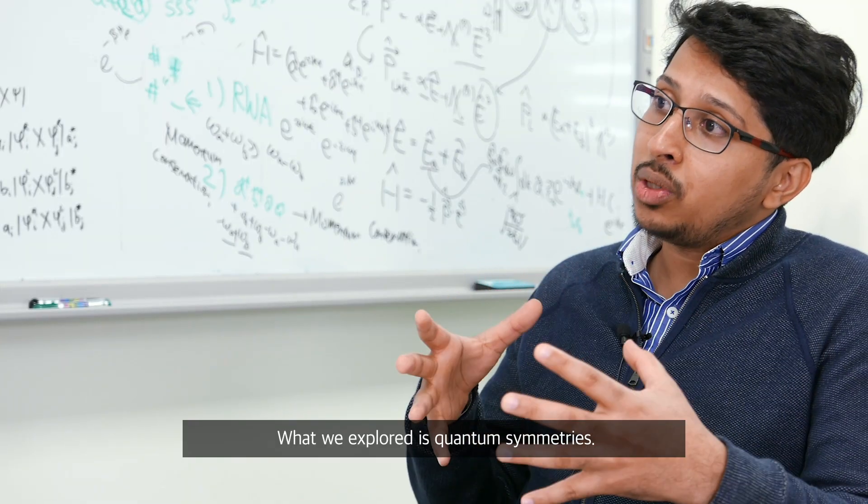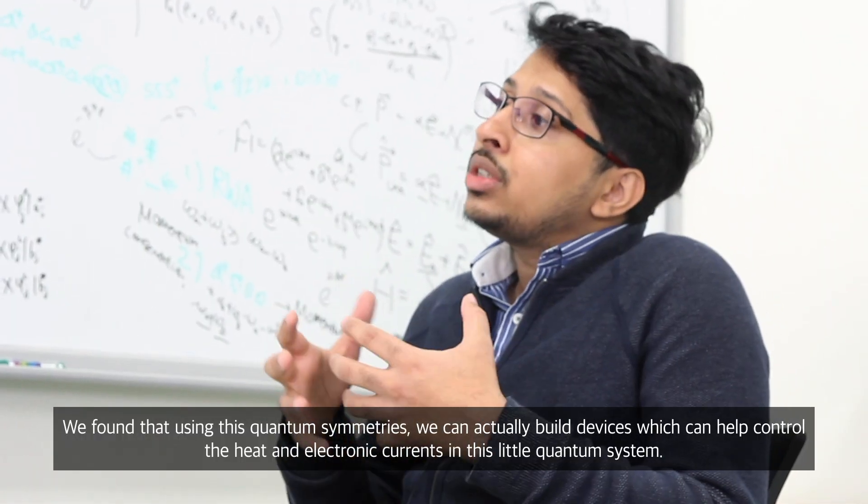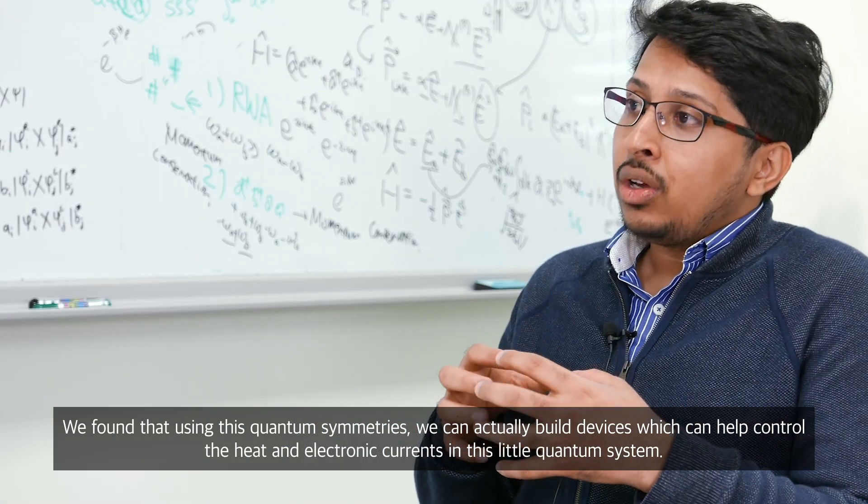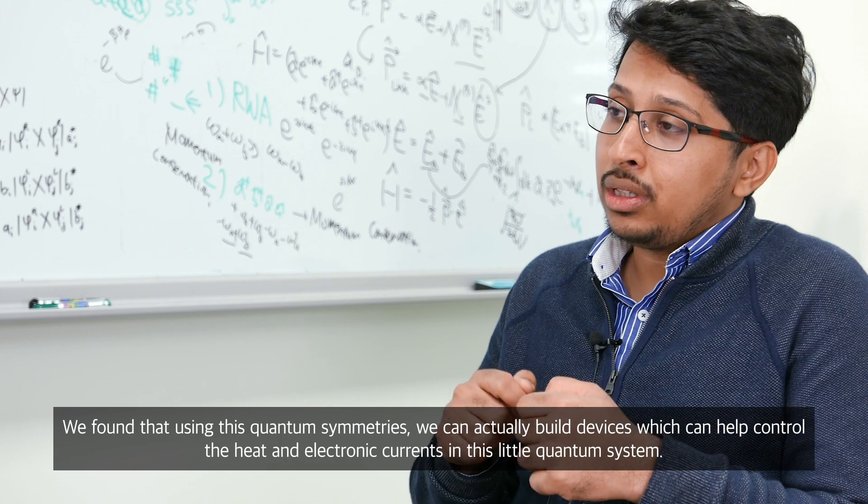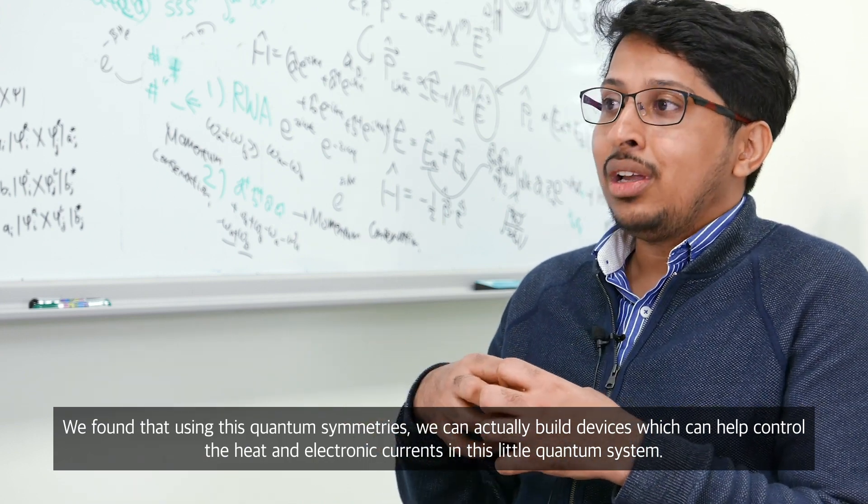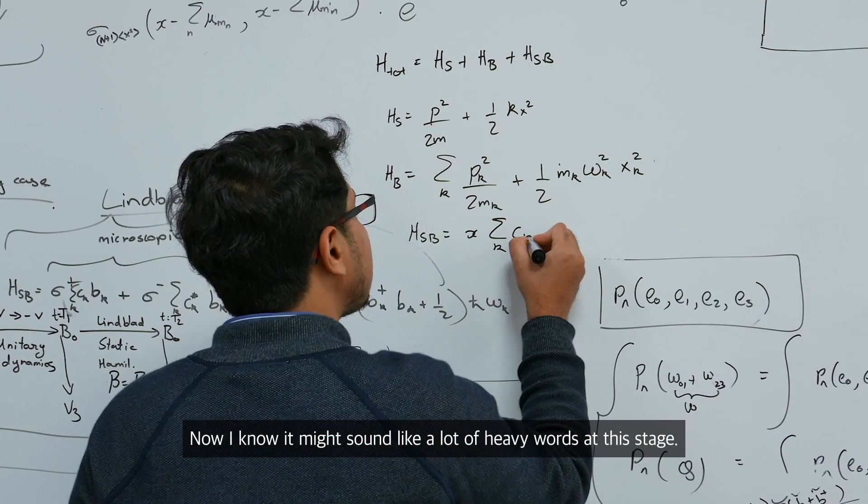What we explored there were the quantum symmetries and we found that using these quantum symmetries, we can actually build devices which can help control the heat and electronic currents in these little quantum systems. Now, I know it might sound like a lot of heavy words at this stage.